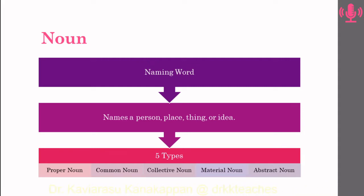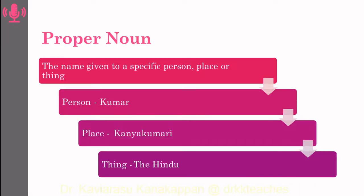This noun is categorized under five types, namely proper noun, common noun, collective noun, material noun, and abstract noun. A proper noun is a unique noun, which is a name given to a specific person, place, or a thing.